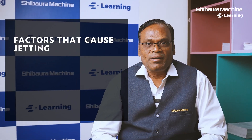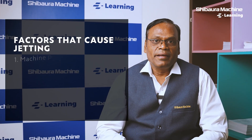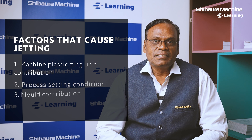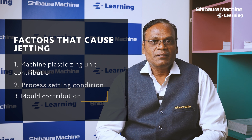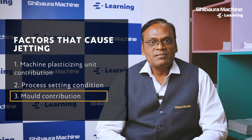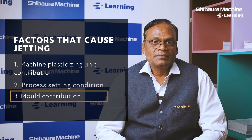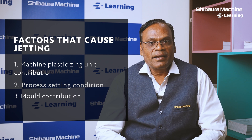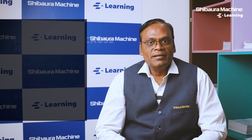Jetting in the molded part is caused by the plasticizing unit of the injection molding machine, by the process settings, or by the polymer. Let us recognize the contributions of each parameter and see how to control it.